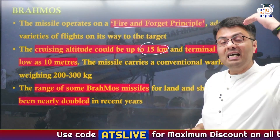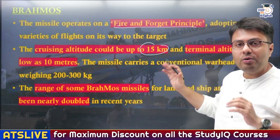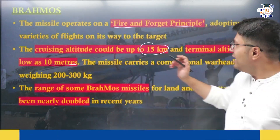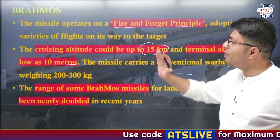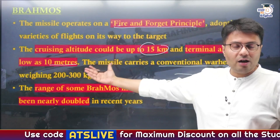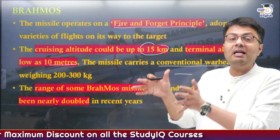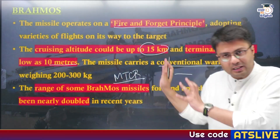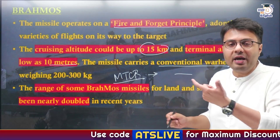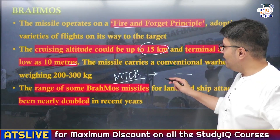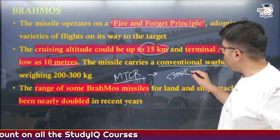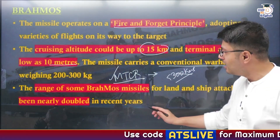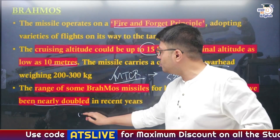BrahMos missiles can cruise at an altitude of as high as 15 kilometers, and at their terminal stage — very close to hitting the target — they can travel as low as 10 meters to avoid radars. They can carry conventional payloads of up to 200 to 300 kilograms, enabling them to destroy much more strengthened and reinforced targets. Earlier, as India was not a part of the Missile Technology Control Regime, it could only develop missiles with less than 300 kilometers range. But now, as India is a part of MTCR, newer versions of BrahMos have much higher ranges of almost 600 kilometers.